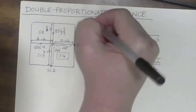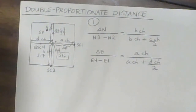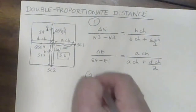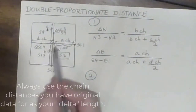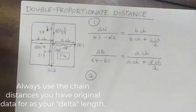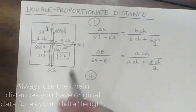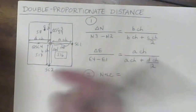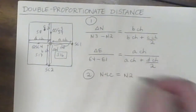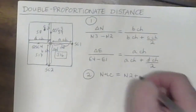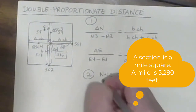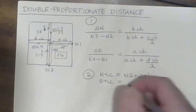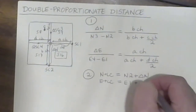So this is actually step one. And just like with single proportionate distances, we find the change in our northing, but then we need to actually finish the job and create our coordinates for our lost corner. So we're going to start with: the northing of the lost corner equals the northing of our second corner plus the change in northing. And the easting of the lost corner equals easting one plus the change in easting.